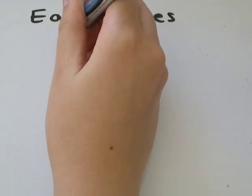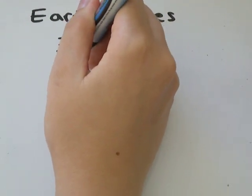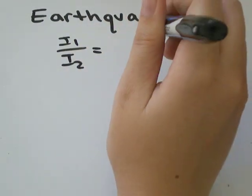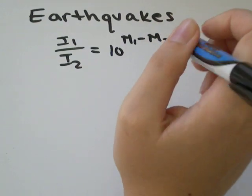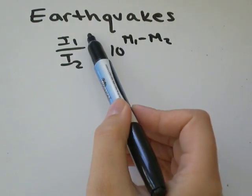The formula says that I1 over I2 equals 10 to the power of M1 minus M2. So that means the intensity of one earthquake compared to the intensity of the other